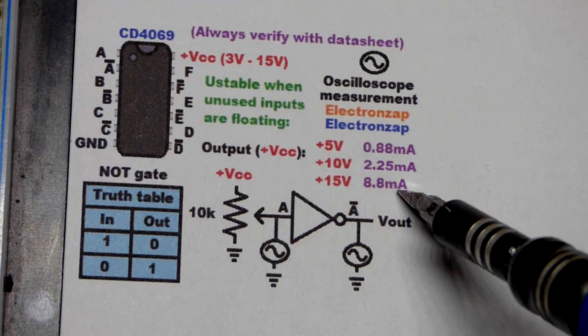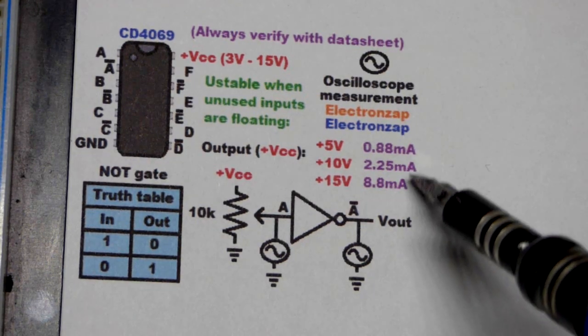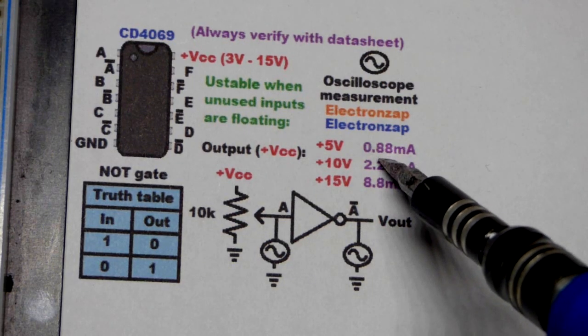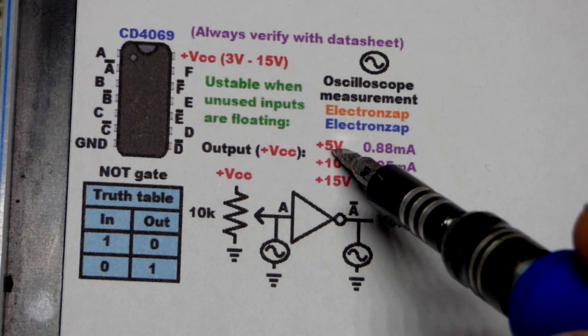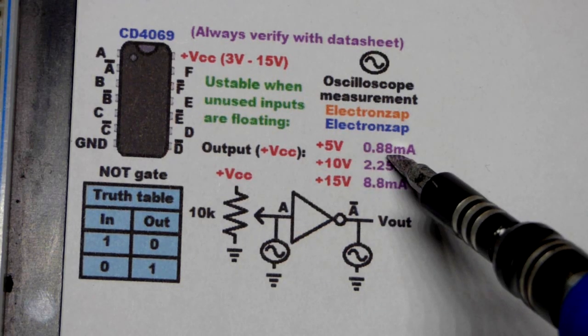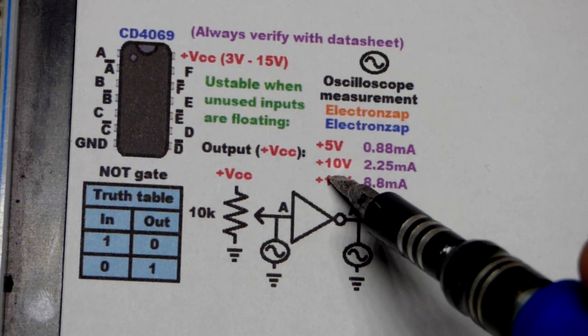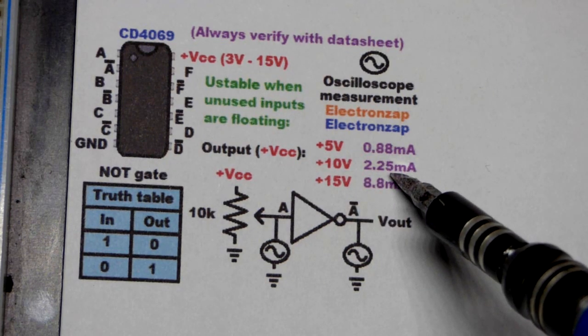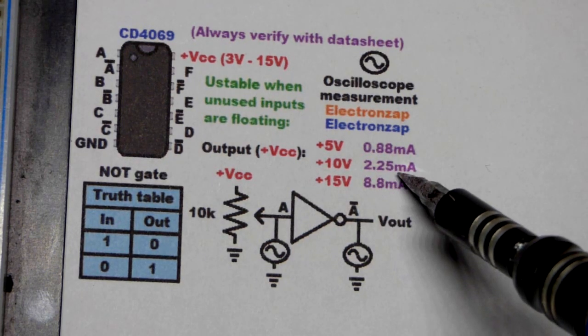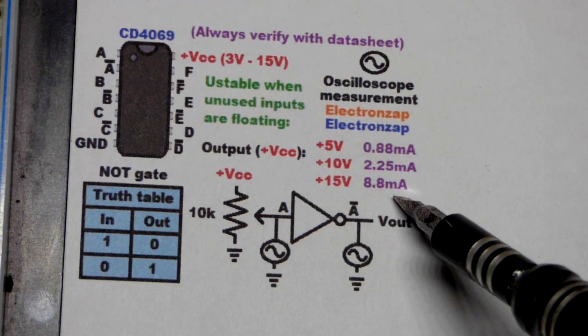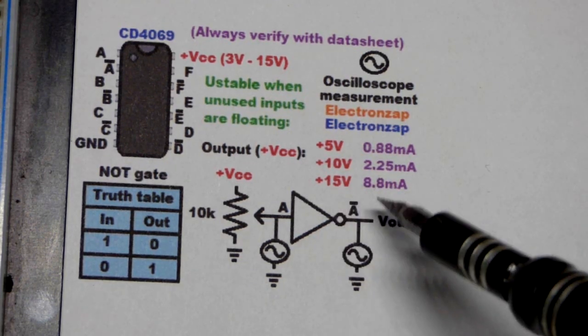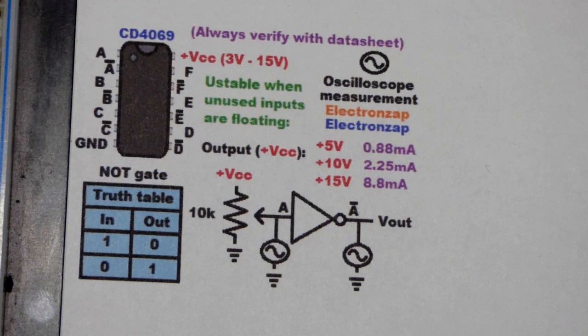Now when it comes to how much current it can output, according to the datasheet you might get like 0.88 milliamps of current at 5 volts, so not even enough to light an LED or something. 10 volts, I mean you could light an LED dim or something, but it's like 2.25 milliamps. 15 volts is like 8.8 milliamps of current.